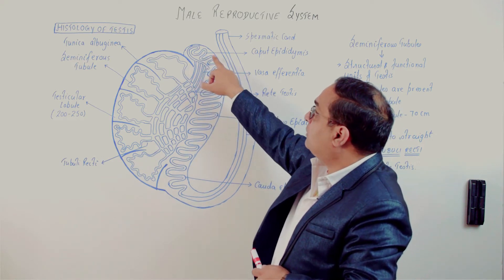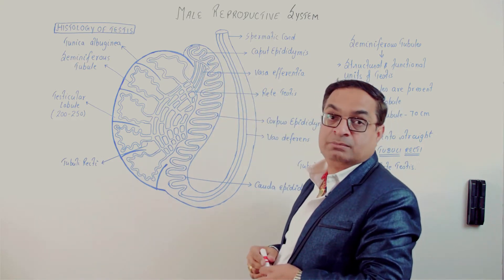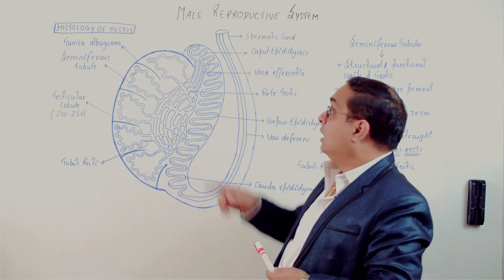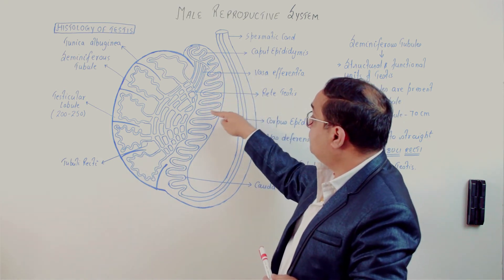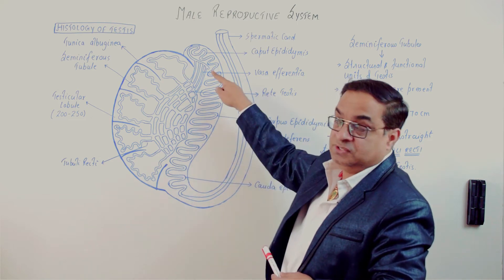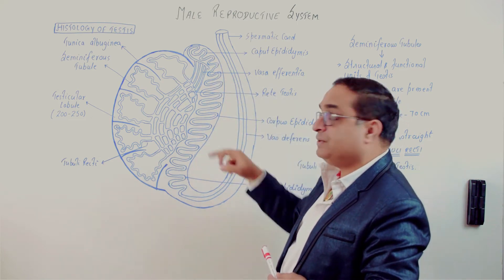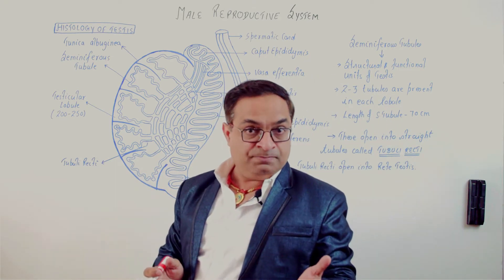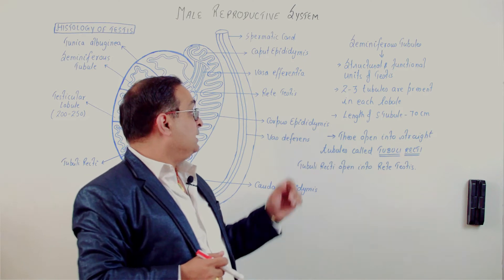Epididymis is nearly 12 meters long, highly convoluted tubule attached with the testes. Epididymis is differentiated into three regions: caput epididymis, the head region; corpus epididymis, the body region; and the tail region called cauda epididymis.